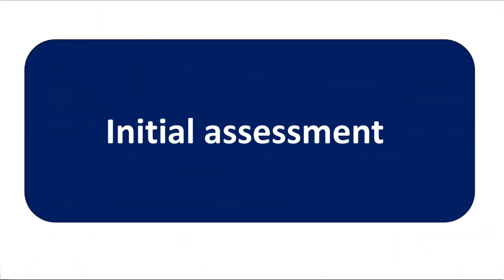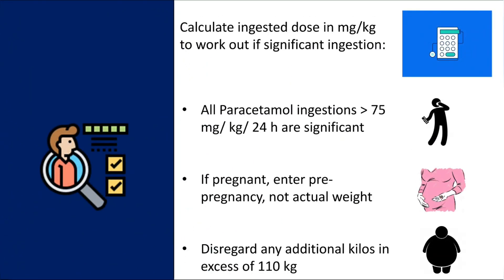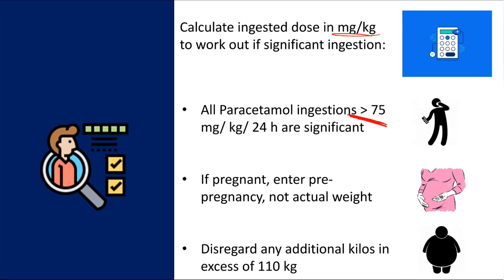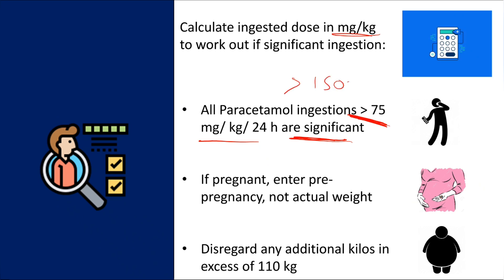For initial assessment, send investigations — most importantly, paracetamol level, to determine whether it is above or below the treatment line. Calculate the ingested dose in mg/kg to determine if there is a significant ingestion. All ingestions more than 75 mg/kg per 24 hours are significant. More than 150 mg/kg is regarded as toxic, but more than 75 mg/kg also warrants consideration for admission.